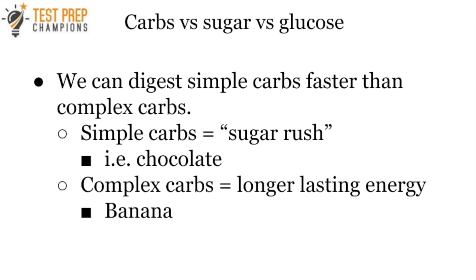Some scientists don't believe the sugar rush is a real thing — they say you eat simple sugars and then 30 to 40 minutes later you crash and feel fatigue without actually getting a rush beforehand. That said, many people personally experience sugar rushes. On the other hand, complex carbs — like those found in a banana — give you longer-lasting, more sustained energy.